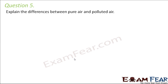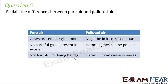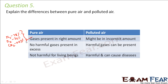Question number 5: Explain the differences between pure air and polluted air. They are just opposite to each other. Pure air will contain gases in the right amount — for example, nitrogen at approximately 78%, oxygen at 21%, carbon dioxide at 0.03%, and other gases in trace amounts.